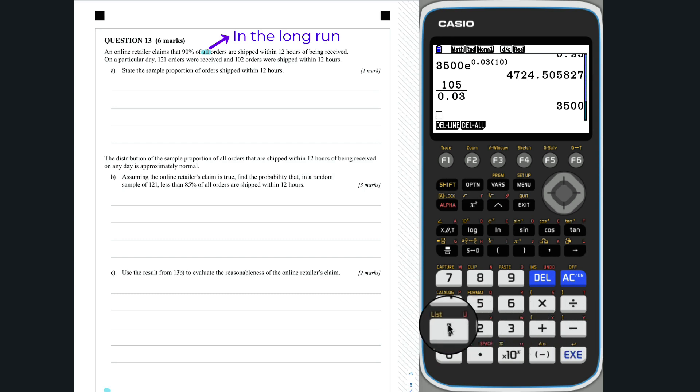Question 13a. In this case, the sample chosen is from one day and consists of 121 orders. So, n is equal to 121.